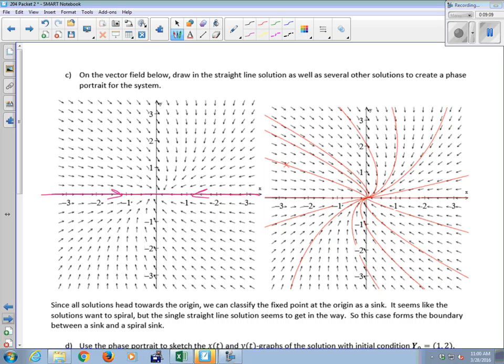There's my one straight line solution. I could try to follow some of my other solution curves here, just pick some random initial values. It looks like everything comes into the origin. It kind of looks like it's spiraling, but it can't quite actually go around the origin. Because of the straight line solution. This is the boundary between a sink and a spiral sink. When you have two real eigenvalues, this would have been a sink. With imaginary eigenvalues, we would have had a spiral sink. This is the boundary.